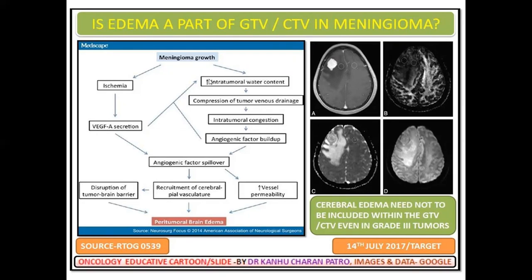Additional mechanisms contributing to peritumoral brain edema include intratumoral water content, compression of tumor venous drainage, intratumoral conditions, angiogenic factor spillover, increased vessel permeability, recruitment of cerebral pial vasculature, and disruption of the blood-brain barrier. Remember — do not include cerebral edema or brain edema in the GTV or CTB in meningioma.